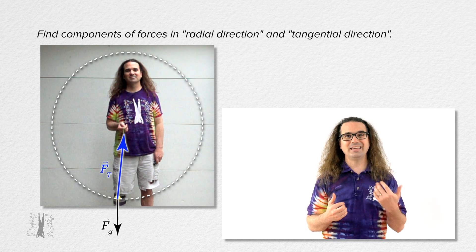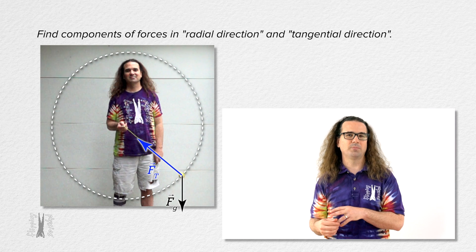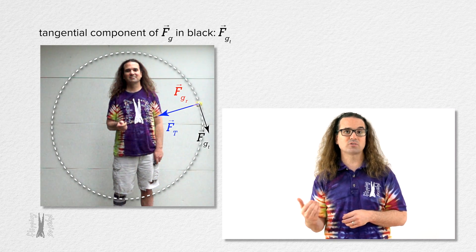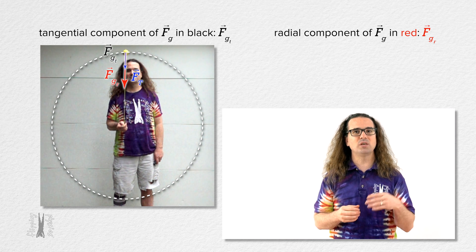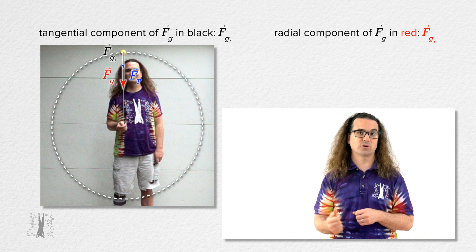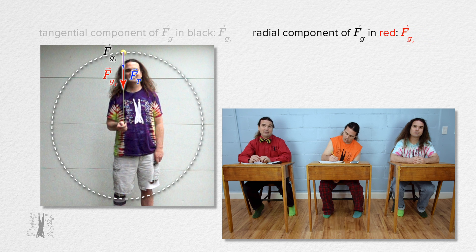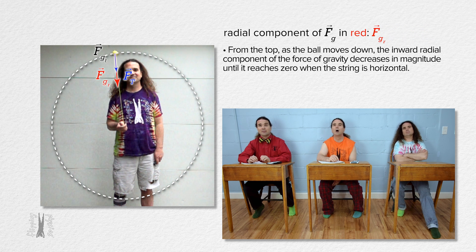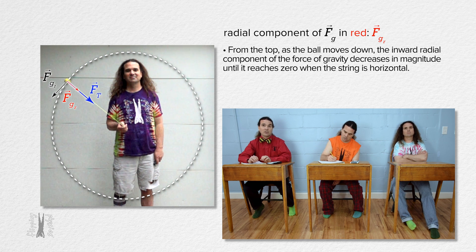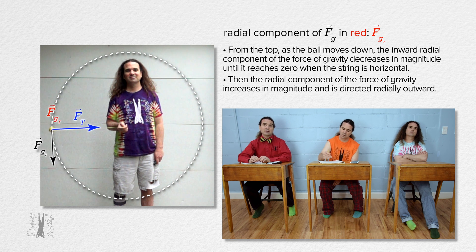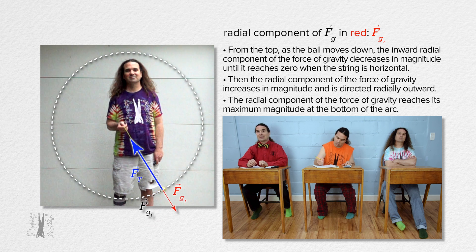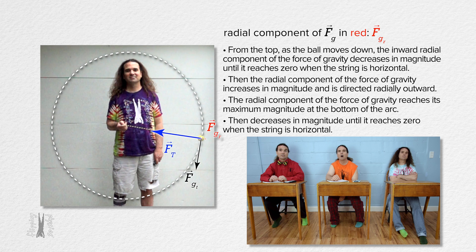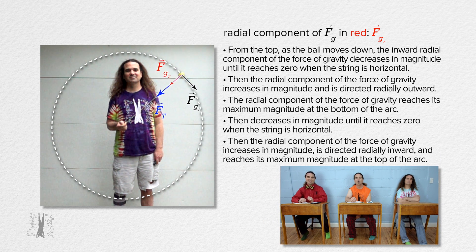Because the force of tension is always directed radially inward, we do not need to find any components of the force of tension. However, the force of gravity we need to separate into the tangential and radial components. Billy, please tell me what you see happening to the radial component of the force of gravity as the ball moves through the vertical circle. Starting at the top of the path, as the ball moves down, the inward radial component decreases in magnitude until it reaches zero when the string is horizontal. Then it increases in magnitude directed radially outward, reaching maximum magnitude at the bottom of the arc, then decreasing until zero when the string is horizontal again, then increasing directed radially inward back to maximum at the top.